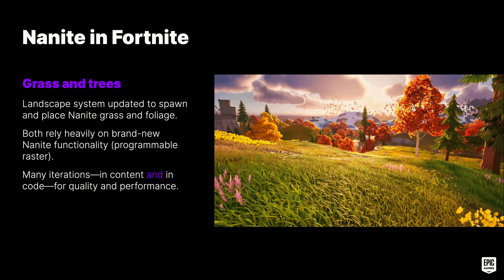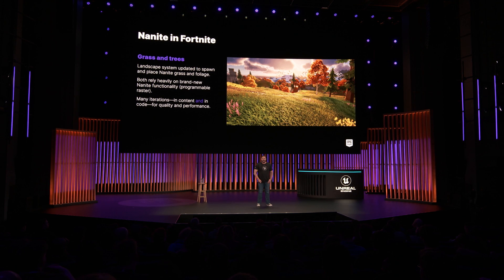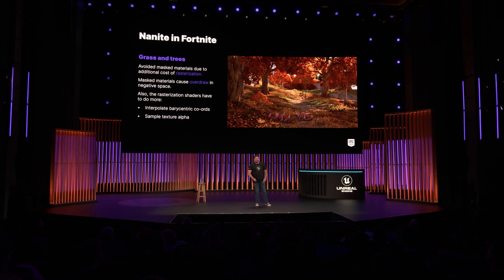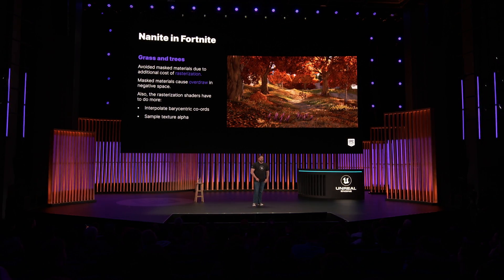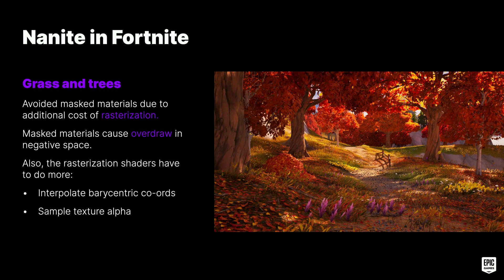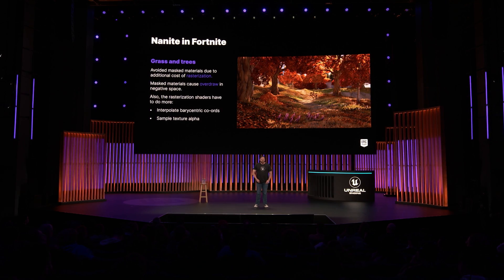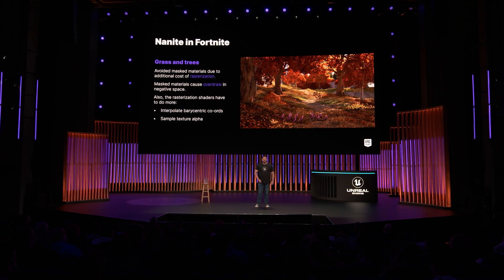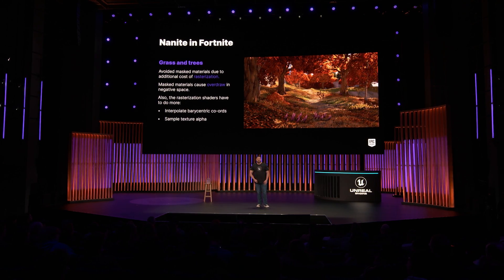For grass and trees, we added support to the landscape system to both spawn and manually place Nanite meshes. Because they animate using world position offset, they relied heavily on the brand-new and largely untested rasterization techniques. During development, the Nanite and TechArt teams worked closely together to continually iterate on trees and grass to reach final quality and performance. We decided early on to avoid masked materials in the final iteration, mainly due to the added rasterization cost. Masked leaves and grass tend to cause excess overdraw in negative spaces, and these materials incur additional overhead in rasterization shaders from having to interpolate barycentric coordinates and sample texture alpha per pixel.